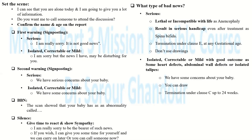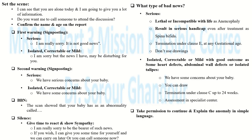For isolated or correctable anomalies, termination can be offered up to 24 weeks under Clause C. After 24 weeks, the patient has no right to terminate for these conditions. For serious conditions, termination is possible after 24 weeks. In both cases, the patient will need assessment in a specialist centre, though this is most relevant in isolated or correctable cases.